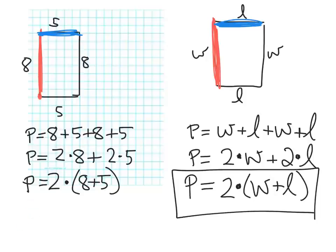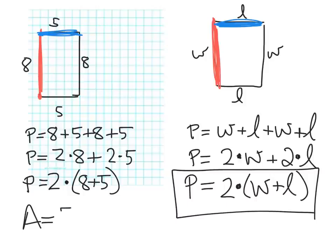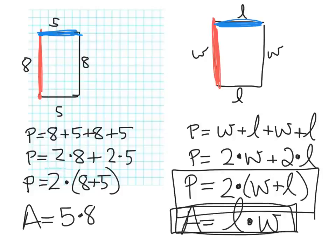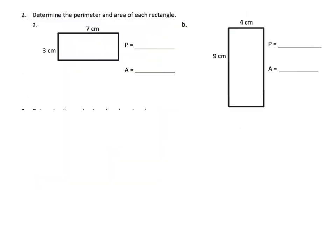For area, area is the idea of how many little squares are on the inside of this rectangle. This follows straight from the third grade modules on multiplication, where they use the area model of multiplication. So we know that the area of this rectangle is length times width. In this case, it would be 5 times 8, which happens to be 40 square units. So over on the right side, the formula would be: area is equal to L times W.